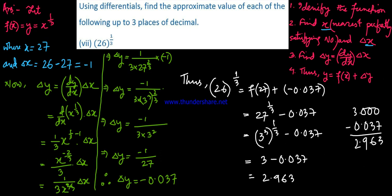So 26 to the power of one by three, the approximate value is 2.963. Okay, see you in the next video.